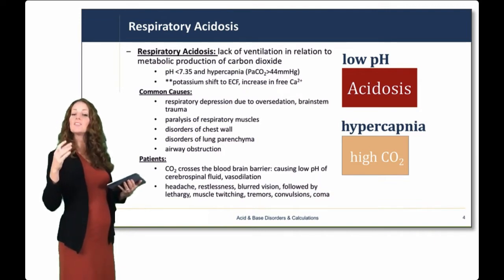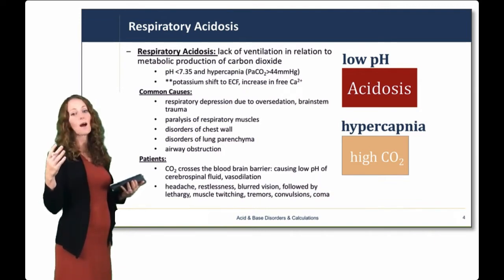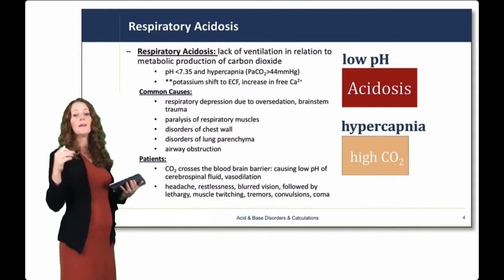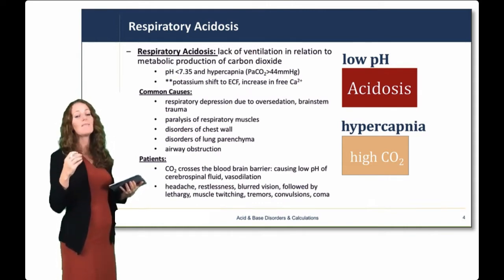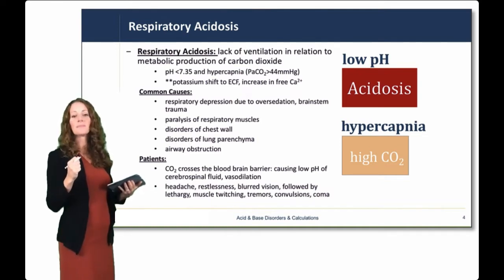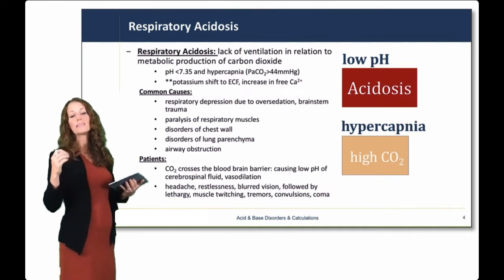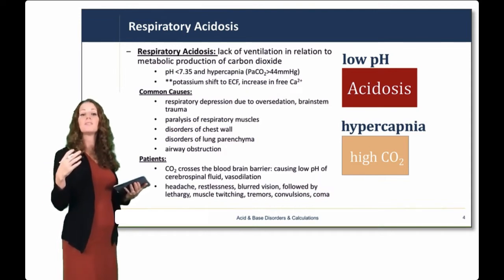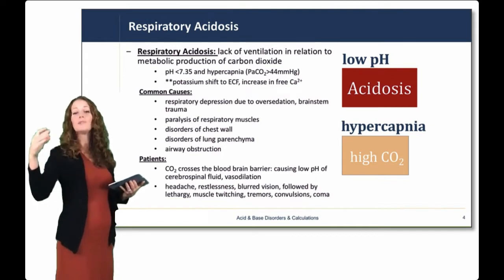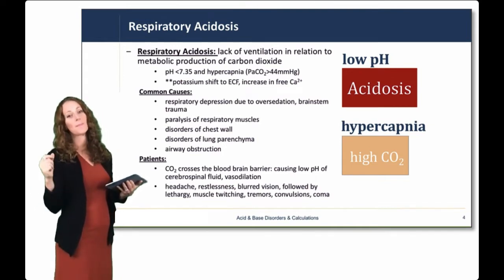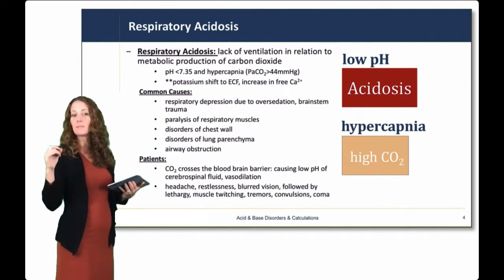For patients, carbon dioxide is able to cross the blood-brain barrier, causing a low pH of cerebral spinal fluid and vasodilation. This can lead to headaches, restlessness, blurred vision, followed by lethargy, muscle twitching, tremors, and even up to convulsions or coma. So, a respiratory acidosis can become severe.